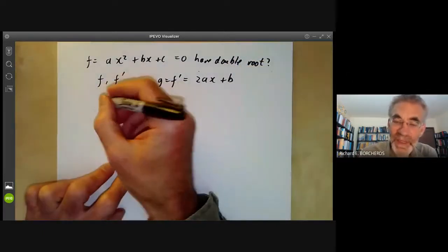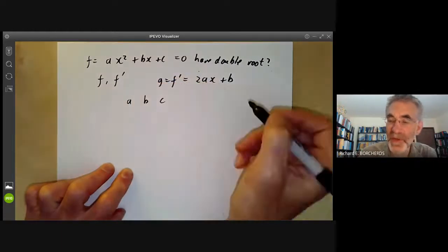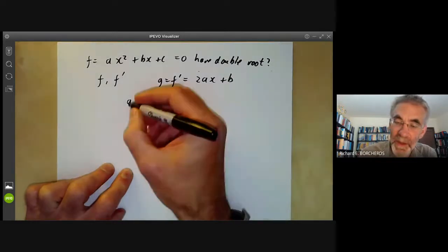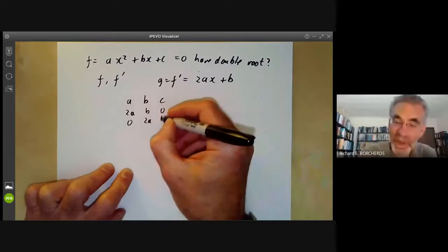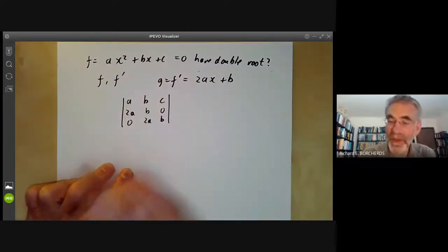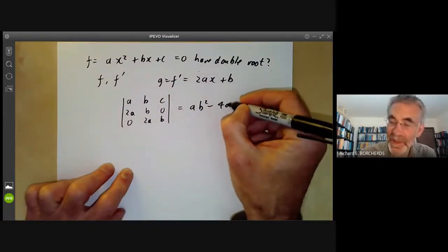Now we work out the Sylvester matrix. Well, it has a, b, c at the top of the coefficients of f. And then we put in the coefficients of g, we get 2a, b, 0, 0, 2a, b. So we just take this determinant. And this determinant is really easy to work out. It's just a times b squared minus 4ac. And here we have the usual discriminant.